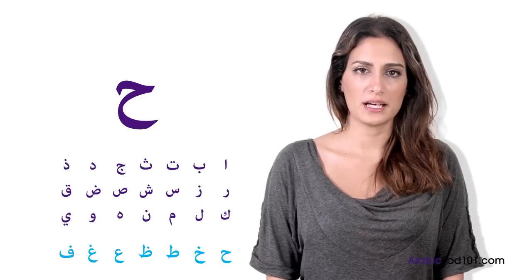The second letter we'll learn in this lesson is Ha. As you can see, it looks like the Jīm, but without the dot and the hook. But of course, it doesn't sound like it. Ha is the first letter of the second group, meaning that it has no counterpart in English.